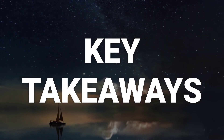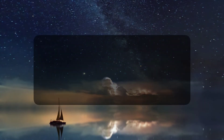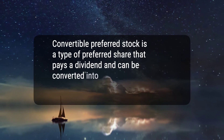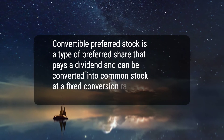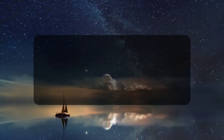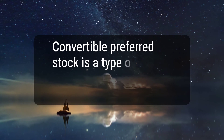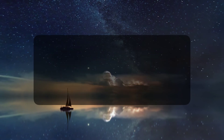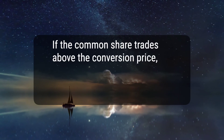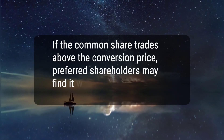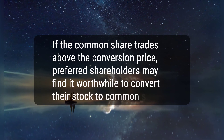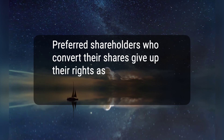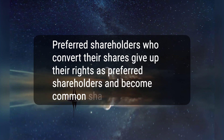Here are four key takeaways. 1. Convertible preferred stock is a type of preferred share that pays a dividend and can be converted into common stock at a fixed conversion ratio after a specified date. 2. Convertible preferred stock is a type of hybrid security with features of both debt and equity. 3. If the common share trades above the conversion price, preferred shareholders may find it worthwhile to convert their stock to common shares. 4. Preferred shareholders who convert their shares give up their rights as preferred shareholders and become common shareholders.